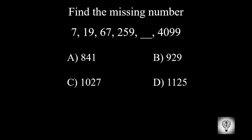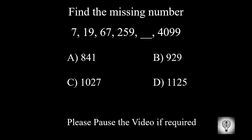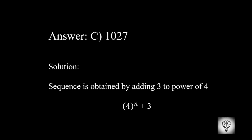Find the missing number. Please pause the video if required. The correct answer is 1027. The sequence is obtained by adding 3 to the power of 4.